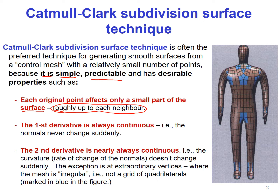The second desirable property that the Catmull-Clark subdivision surface technique has is that its first derivative is always continuous. The definition of a smooth surface is that its derivative does not change suddenly, which is exactly what we mean here — the first derivative changes smoothly and never changes suddenly.